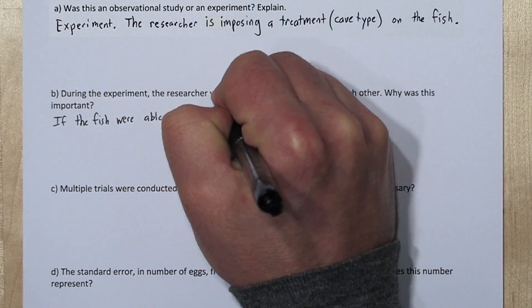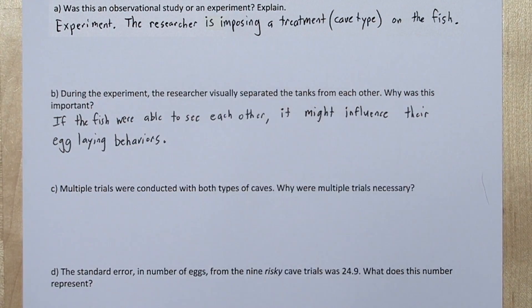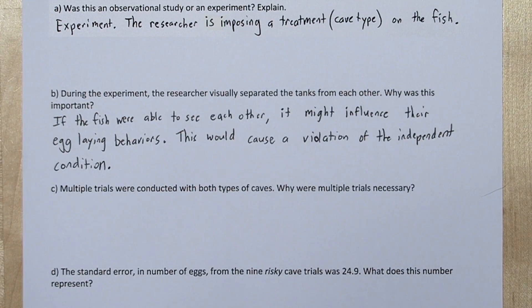If the fish were able to see each other, it might influence their egg-laying behaviors, and that would be a violation of the independence condition.